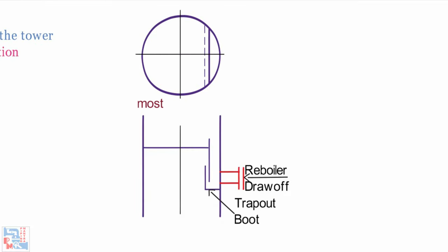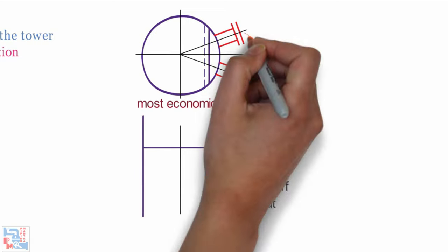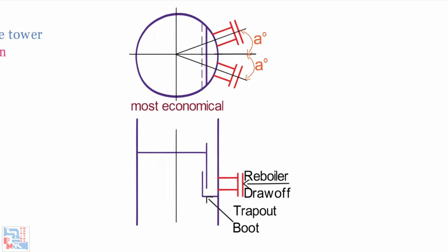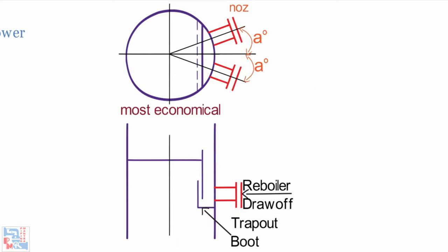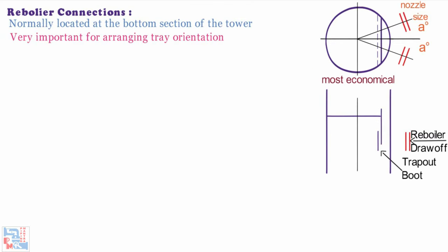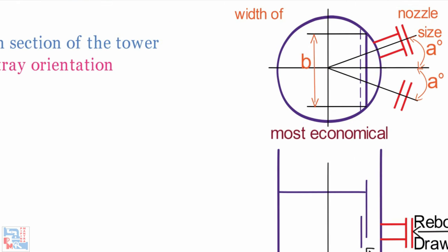The simplest, most economical location for reboiler connections with the alternative location within the angular limits of A is shown. The angle A depends on the size of reboiler draw off nozzle and the width of the boot dimension B at the tray downflow.